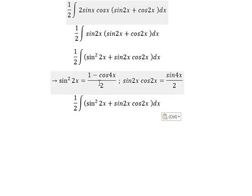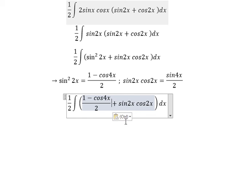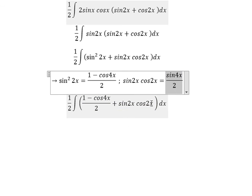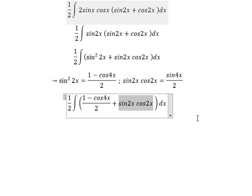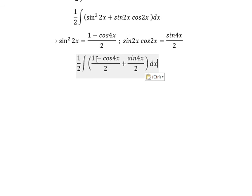This one we change for this one. This one we change for sine 4x cosine 4x over 2. And now we can get the final answer.